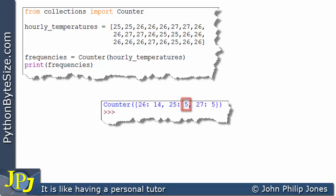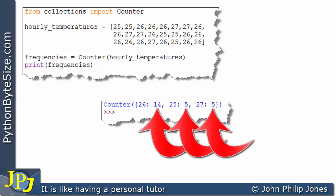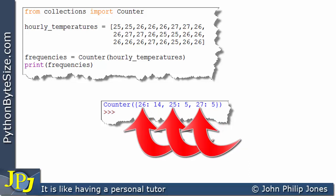If we go to the other temperature that appears in the list, 27, we can see there are five occurrences of that. So what we've got here, albeit in a different data structure, is the frequencies with which the various temperatures appear.